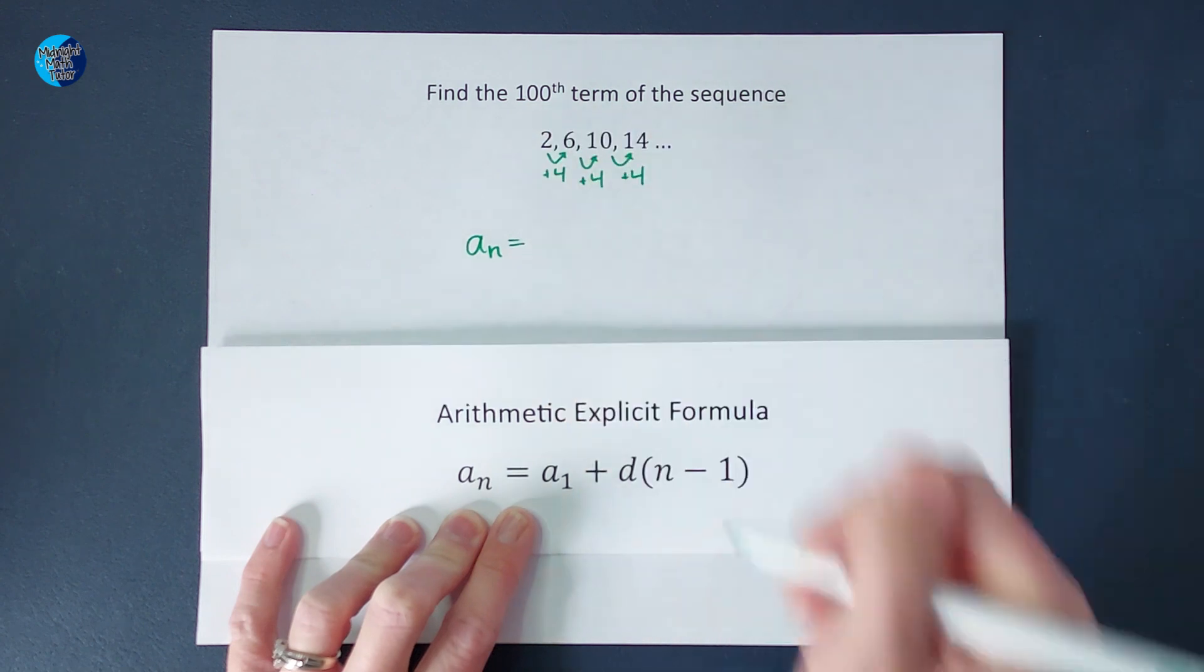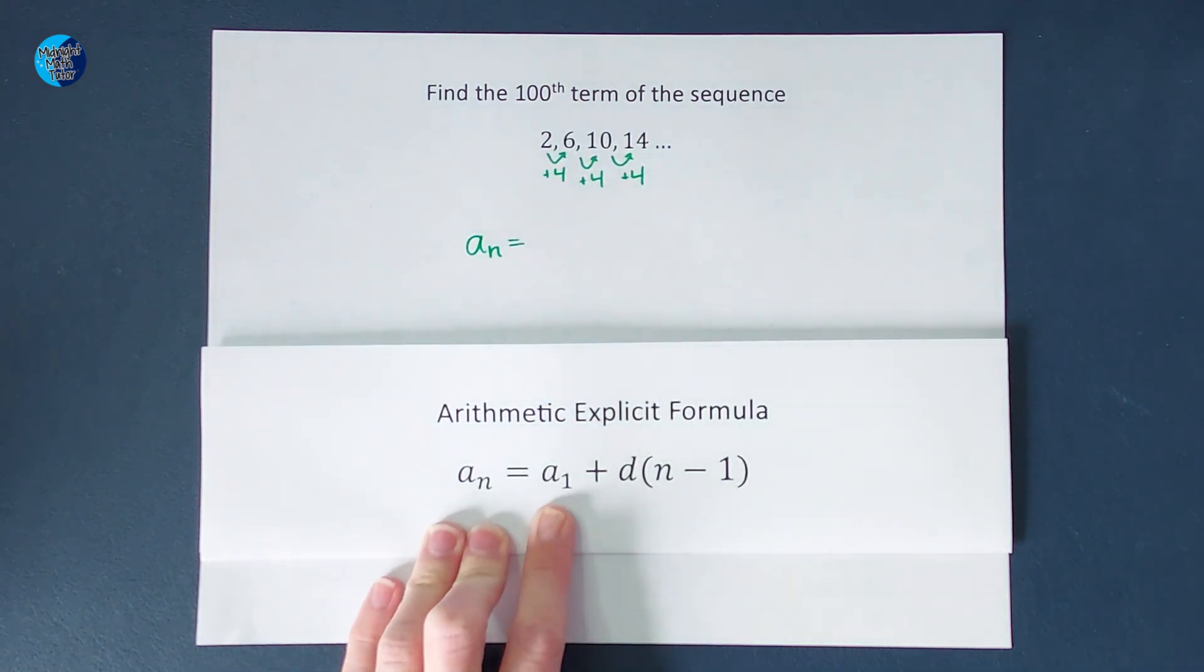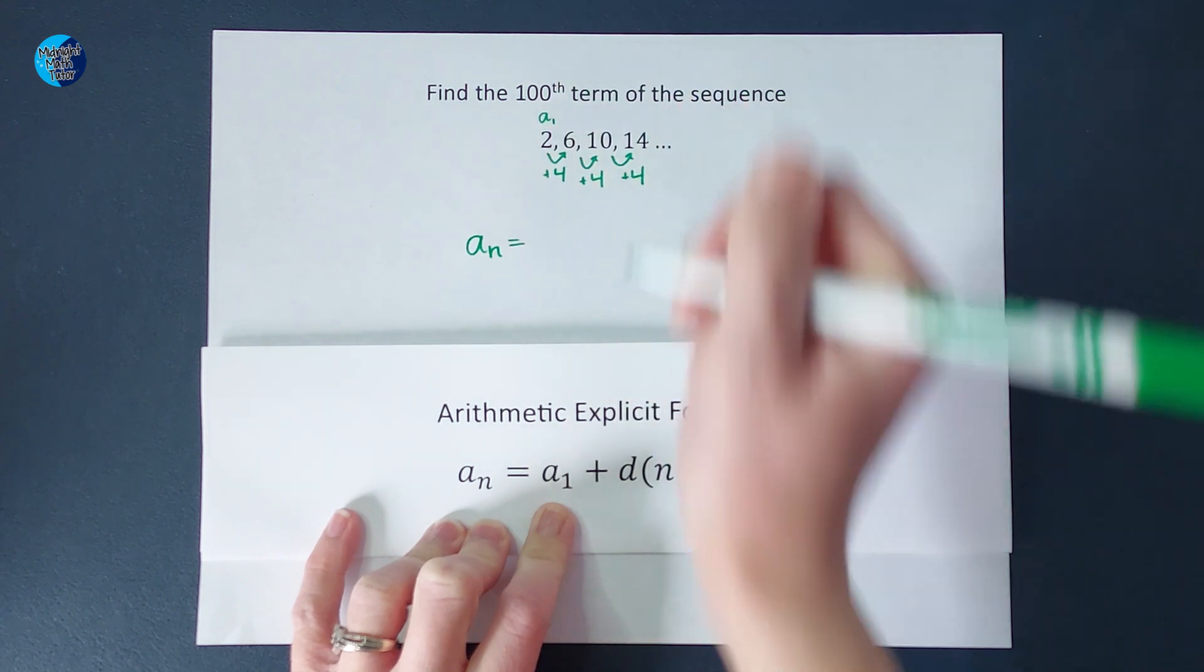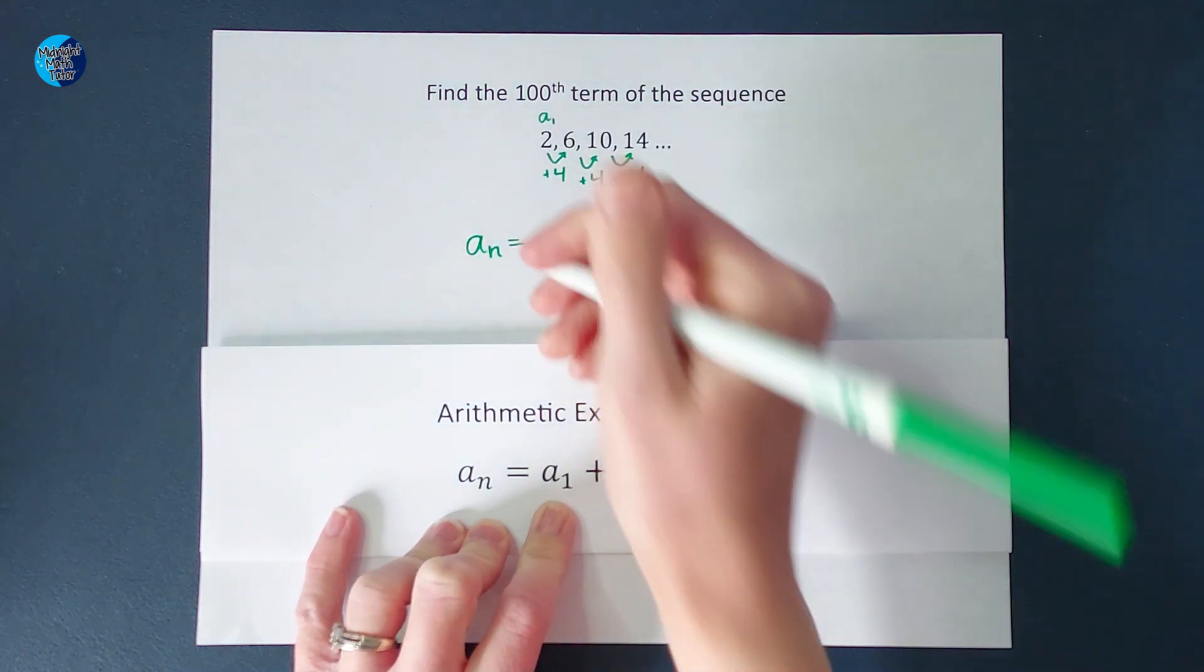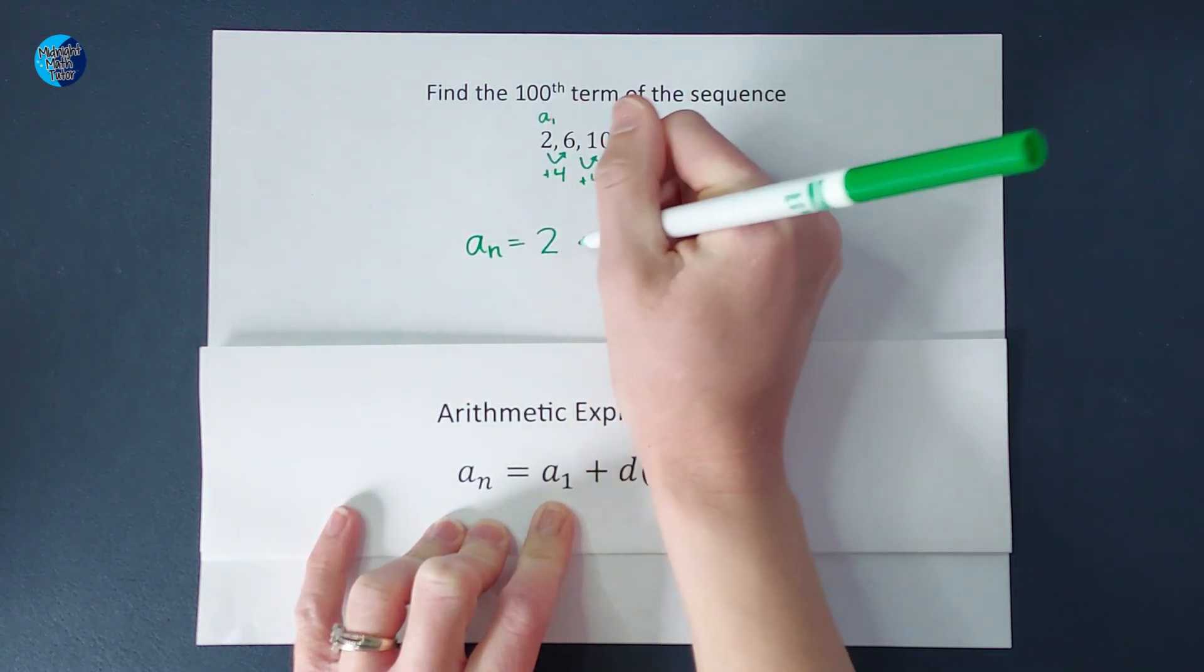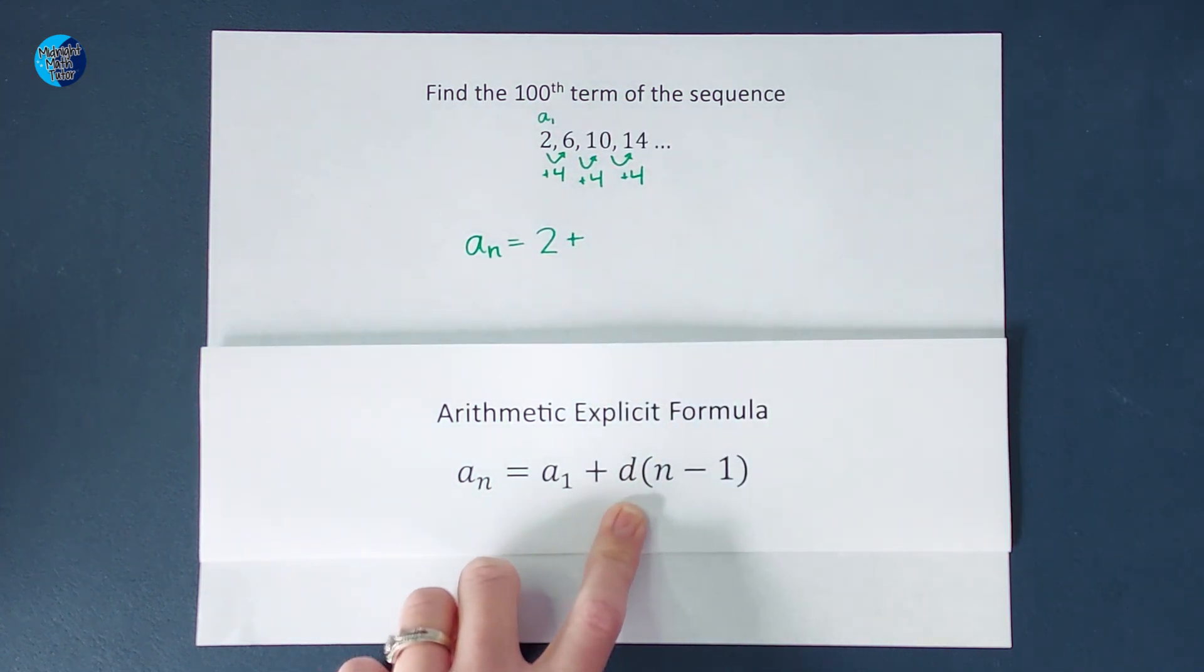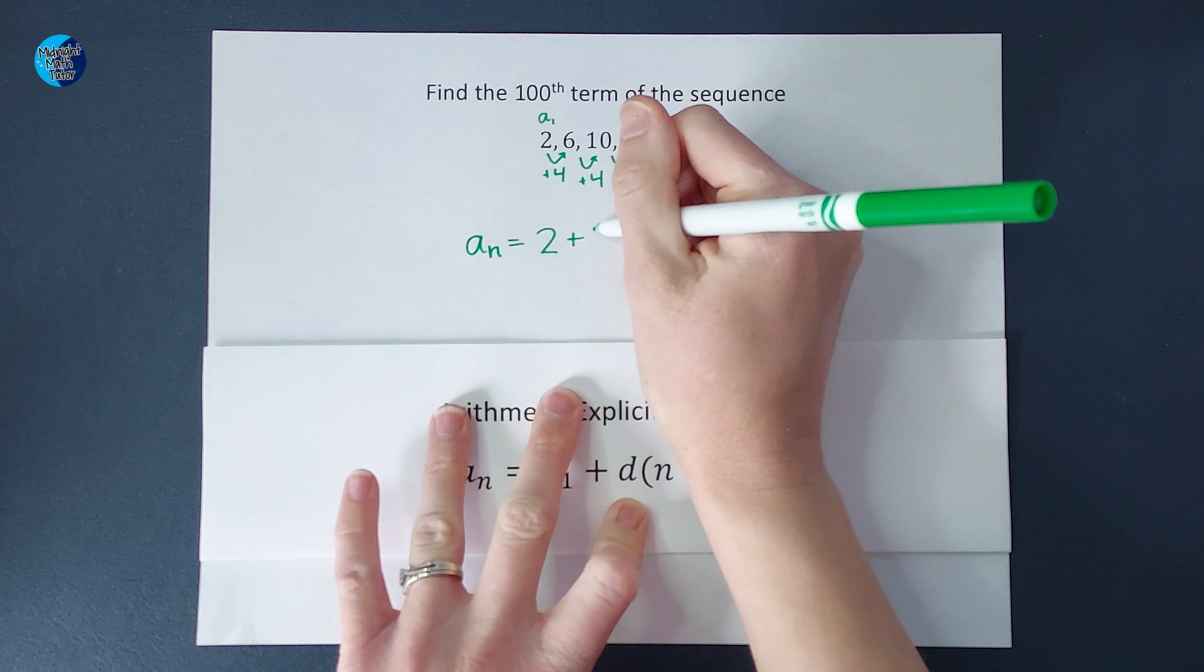Whatever number you want to find is equal to a sub 1. That is my first term. We also call that a sub 1. So my first term, a sub 1, plus d. That stands for the common difference. Basically, what's changing each time, and that's what we figured out. We figured out we are adding 4 each time.